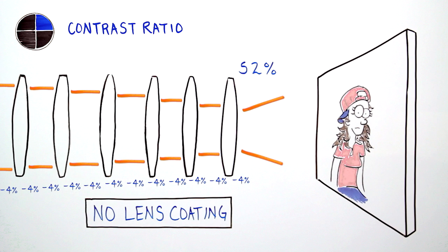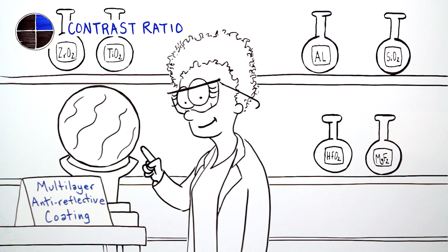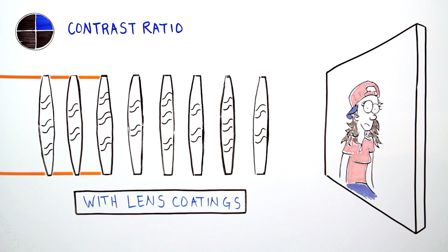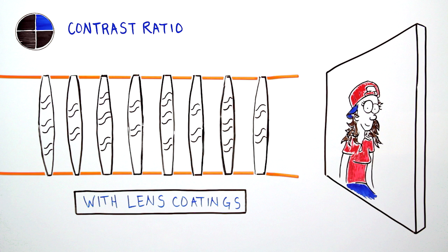The result is a muted, lackluster picture. So what's the antidote? State-of-the-art, multi-layer, anti-reflective lens coatings. These super-thin coatings are made of metallic compounds that create secondary reflections and cancel out the primary ones, resulting in vivid high contrast images.